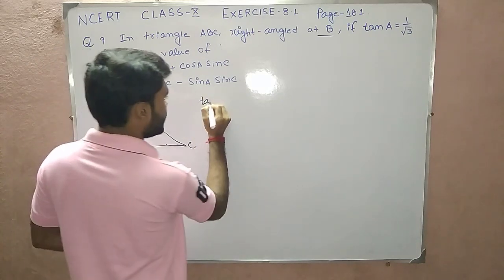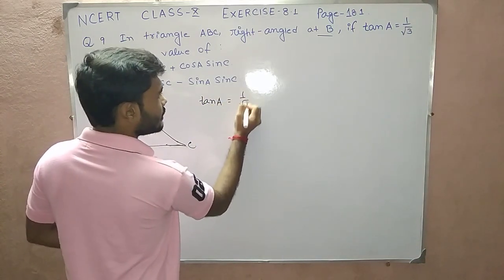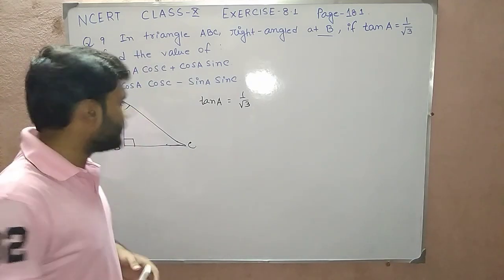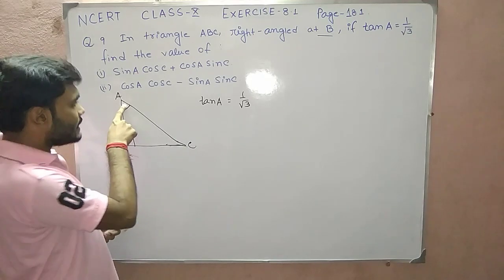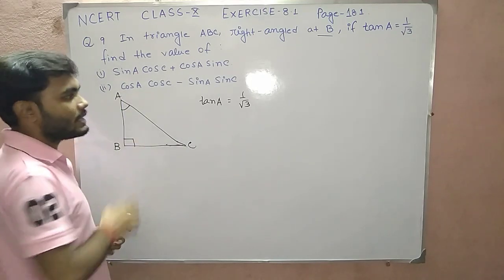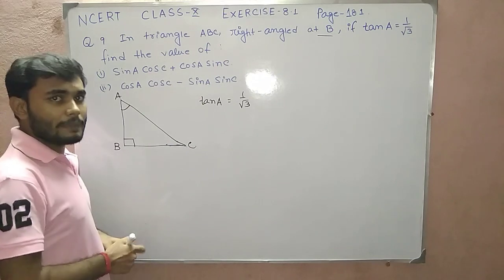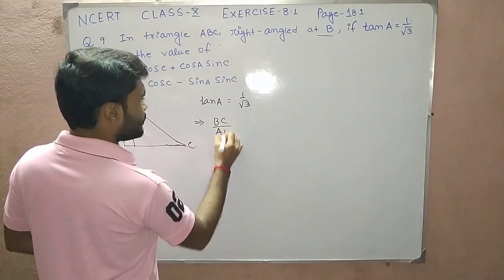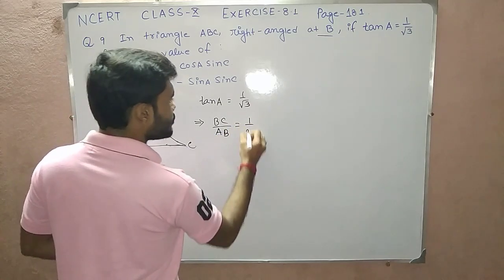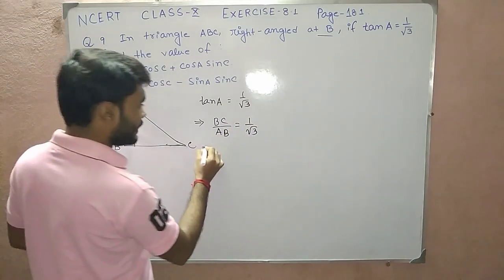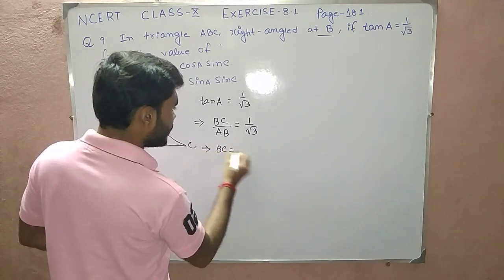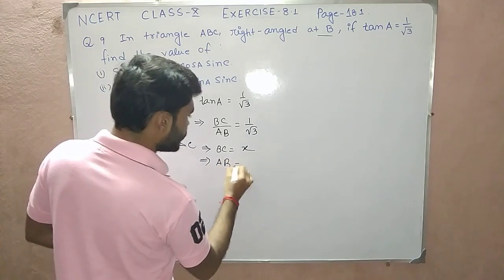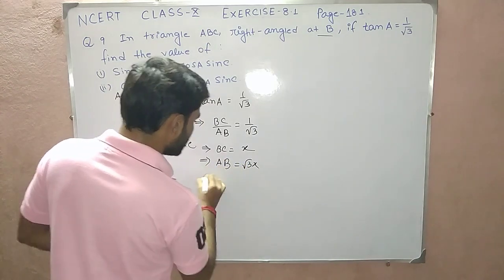Now, tan A equals 1 by root 3. We know that tan is perpendicular by base. With respect to angle A, AB would be the base and BC would be the perpendicular. So BC by AB equals 1 by root 3. Since this is a ratio, we get BC equals x and AB equals root 3x, where x is a non-zero constant.